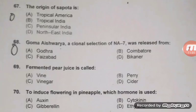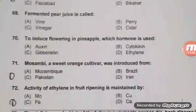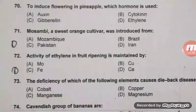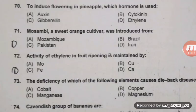Priyanka is also a famous variety of jamun released from Godra. Fermented pear juice is called perry — B is the right answer. To induce flowering in pineapple, which hormone is used? Right answer D — ethylene. Question 71: Mosambi, a sweet orange cultivar, was introduced from Mozambique.